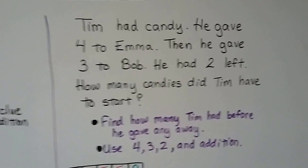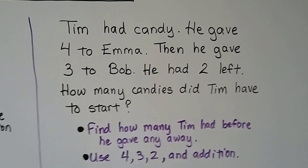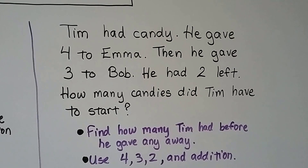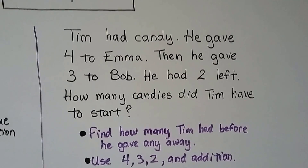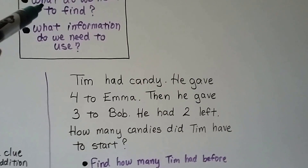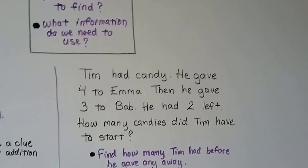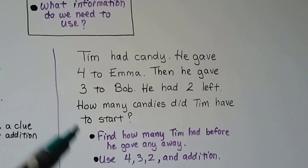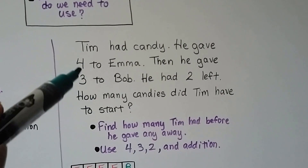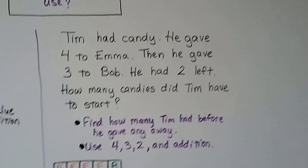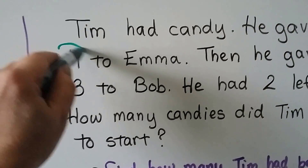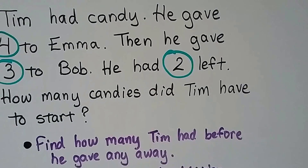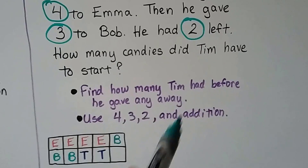Tim had candy. He gave four to Emma. Then he gave three to Bob. He had two left. How many candies did Tim have to start? What do we need to find? We need to find how many Tim had before he gave any away. What information do we need to use? We need to use the four, the three, and the two — these are our important numbers. How will we use the information? We'll use addition; it's asking how many.